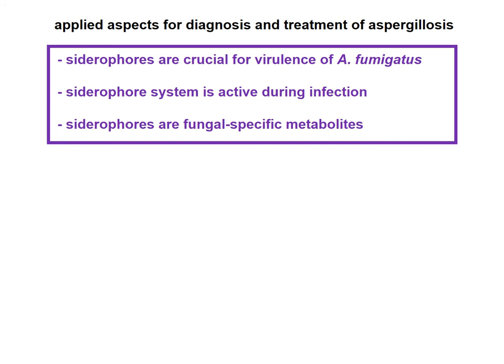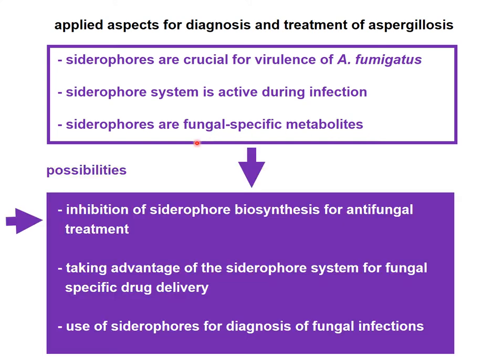Now I come to the applied aspects of siderophores. As I showed you, siderophores are crucial for virulence of Aspergillus fumigatus, which indicates that the siderophore system is active during infection, and siderophores are fungal-specific metabolites. The possibilities are: inhibition of siderophore biosynthesis for antifungal treatment — we do not have a compound to treat so far, but Pablo Sobrado from Virginia Tech found that Celastrol can inhibit SidA, though it's not used in the clinics yet.